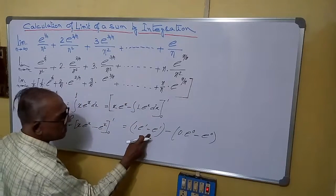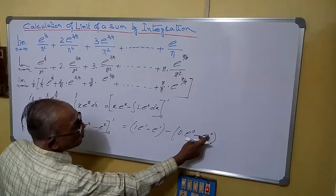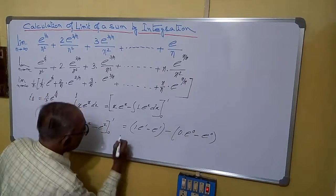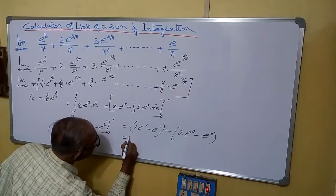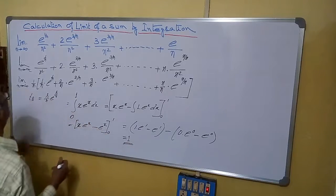This is e minus e^0 minus 0, and e^0 is 1, so minus of minus 1 equals to plus 1. This is your final answer of this limit.